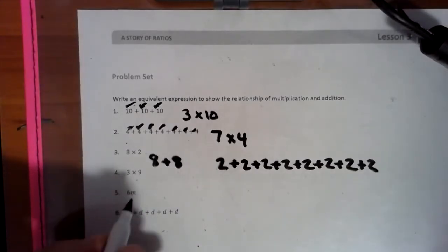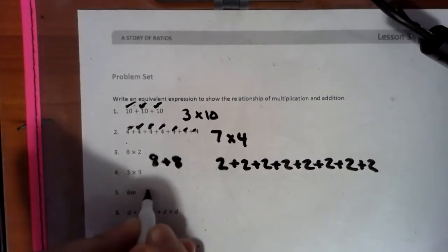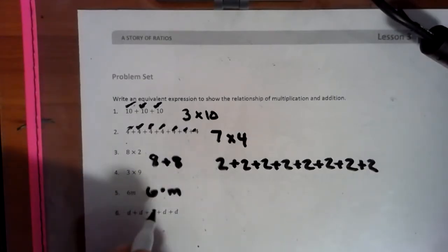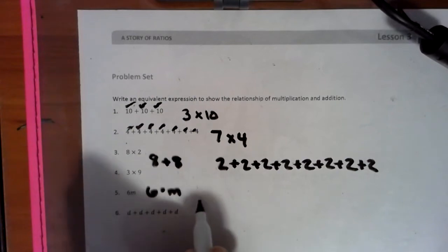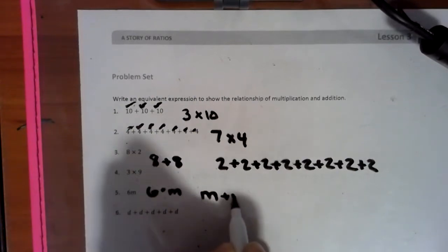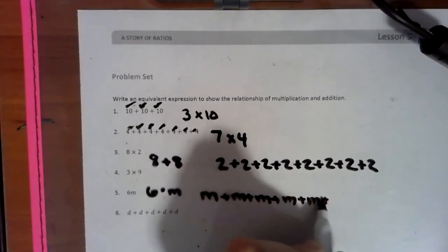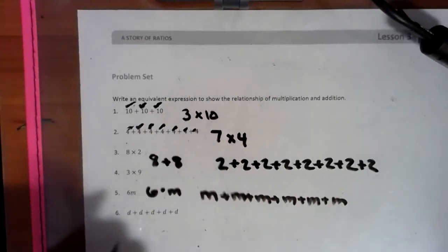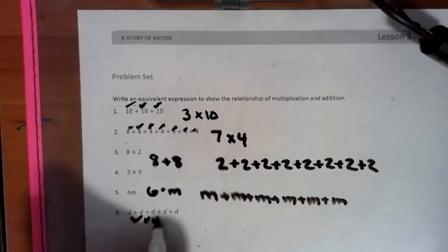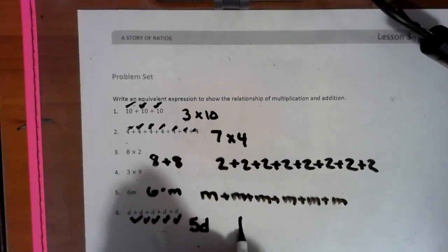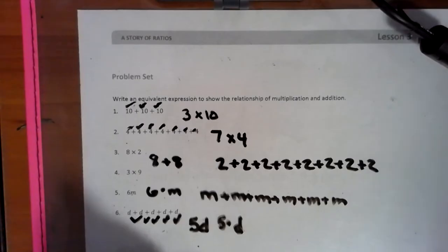We'll look at problems 5 and 6 now. 6m means 6 times m currently. So in order to get 6 times m, we go to addition — that means an m written 6 times. And same here: we have d plus d plus d plus d plus d plus d, we have 5 d's. So we could just put 5d, or 5 times d. Either way, that works.